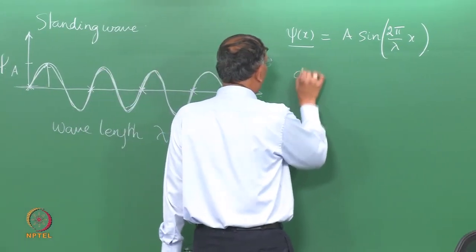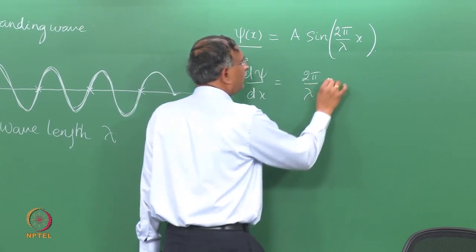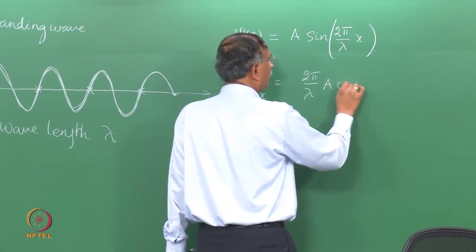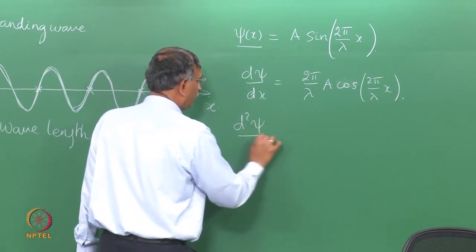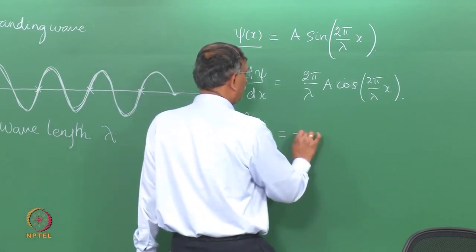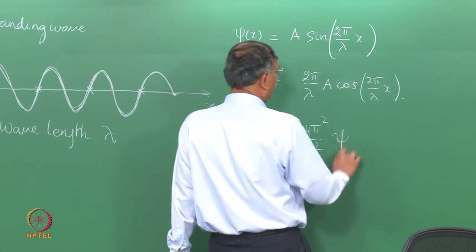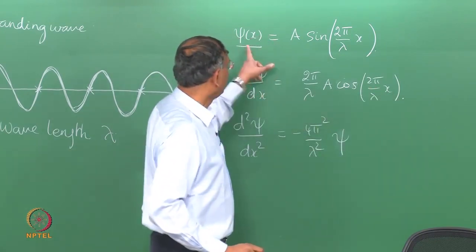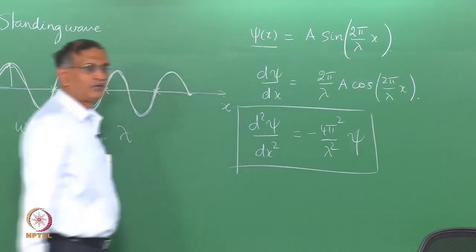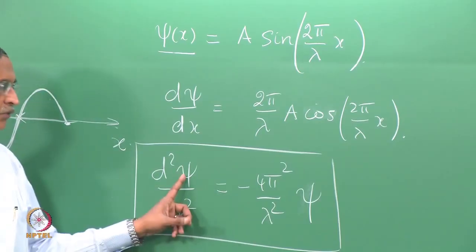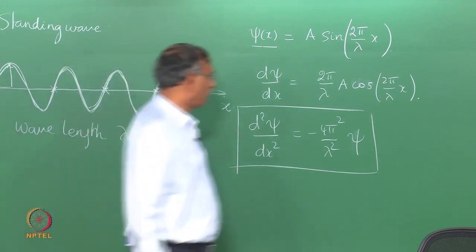For the first derivative: d(psi)/dx = (2π/λ) · A cos(2π/λ · x). The second derivative: d²(psi)/dx² = −(4π²/λ²) · psi(x), because the sin term returns to give psi(x). Therefore, the standing wave satisfies the differential equation d²(psi)/dx² proportional to psi, with lambda being the associated wavelength.